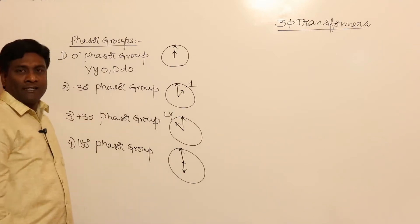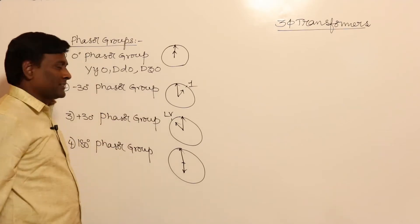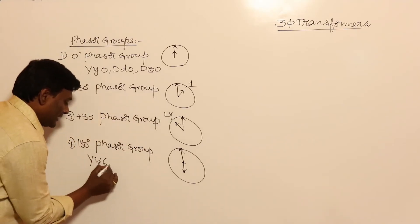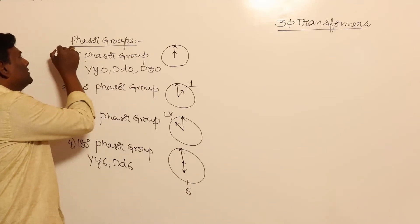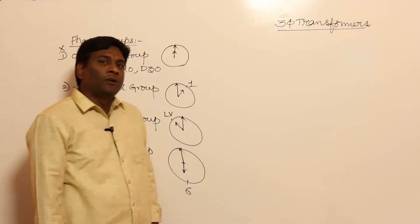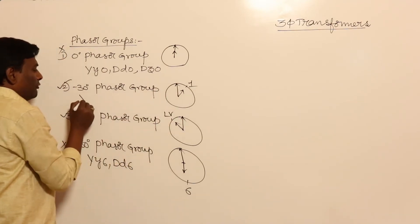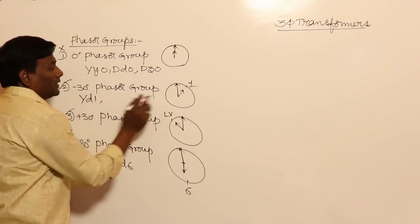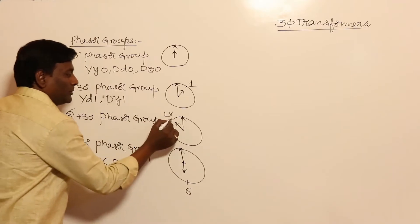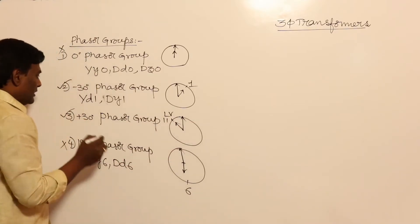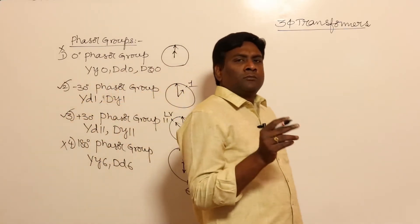For 0 degrees phasor group, YY0, DD0, and DZ0 (delta zigzag interstar) are possible. For 180 degrees, YY6 and DD6 come. In our GATE exam, these are almost 100% sure not to come — questions will come only from minus 30 or plus 30 degrees. Minus 30 degrees means YD1 and DY1 are possible; plus 30 degrees means YD11 and DY11 are possible.